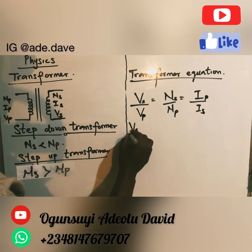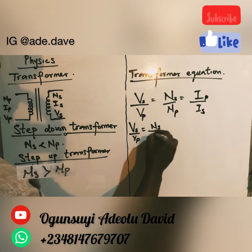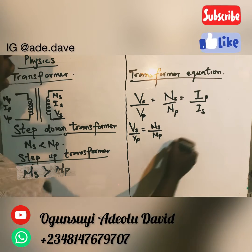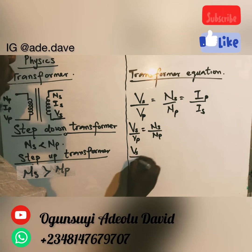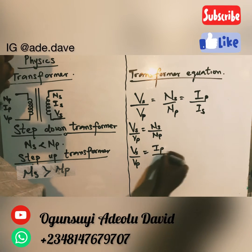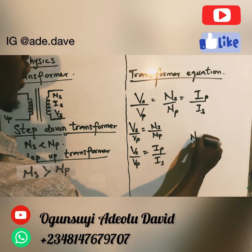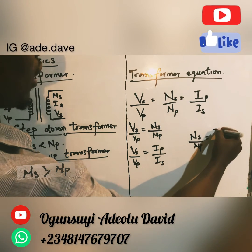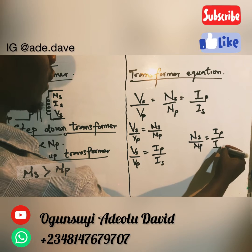The first equation is VS over VP equals NS over NP. The second equation is VS over VP equals IP over IS. The third equation is NS over NP equals IP over IS.